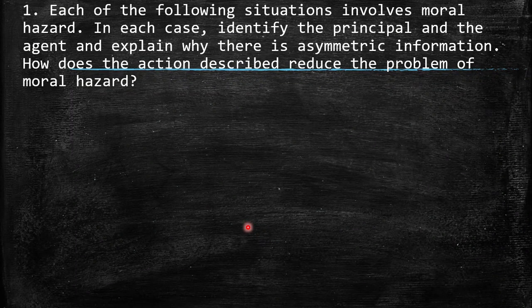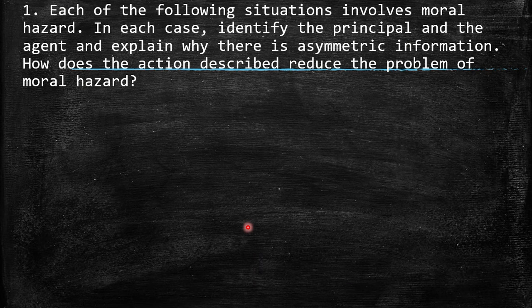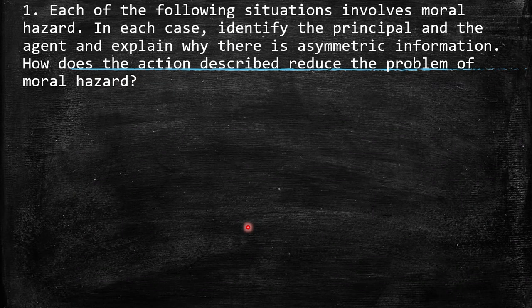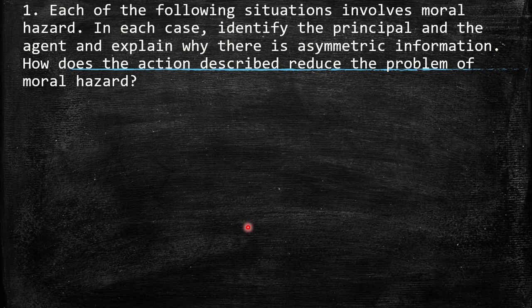When we talk about asymmetric information, this is the opposite of symmetric information, where both parties have the same quantity of information. Asymmetric information is when one party has more information than the other. The principal is the one that depends on the behavior of the agent. The agent doesn't incorporate the utility or benefits of the principal, so the agent doesn't care too much about the principal's results and pursues their own utility, satisfaction, and profits.